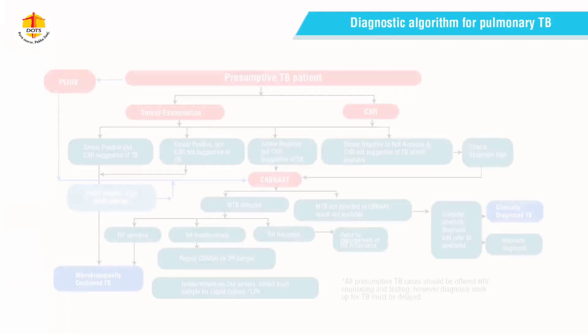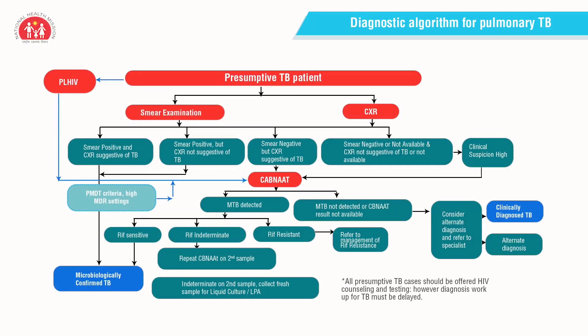This algorithm talks about the diagnosis of pulmonary TB. I would like to emphasize on the key points of this particular algorithm. All presumptive TB patients will undergo sputum smear examination and chest X-ray. If the smear is positive and the patient is not at risk of DR-TB, they will be categorized as microbiologically confirmed TB. Chest X-ray is used as a screening tool in this algorithm. In smear-negative patients, if any abnormality is seen on chest X-ray, the sample needs to be subjected to CBNAAT for diagnosis.